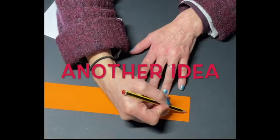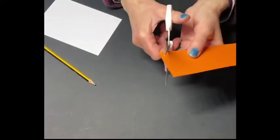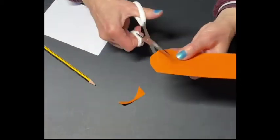Another idea is to draw out a different shape. This time it's more like an eye shape, like an elongated oval shape. Cut these out.